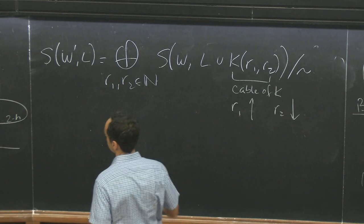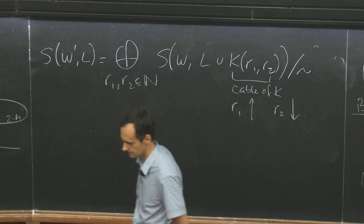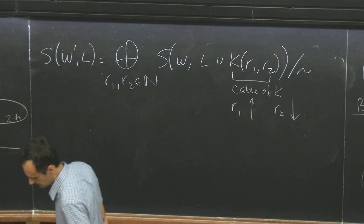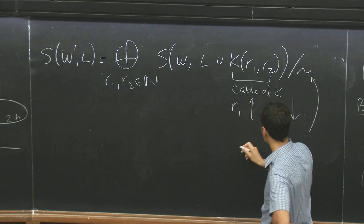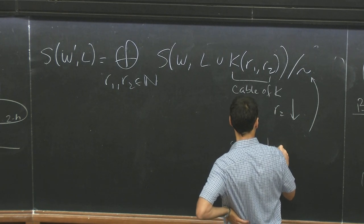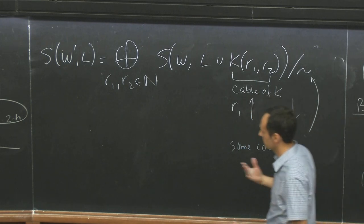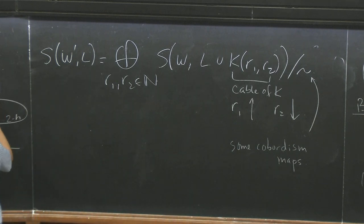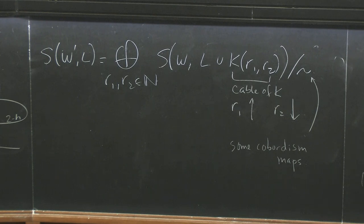So you have to understand kind of the, well, let's say you attach things to a ball, then you have to understand the Khovanov homologies of all the cables of the attaching link. And then you have some, well, some equivalence relation. Maybe for reasons of time, I'll just say that this is given by some cobordism maps between cables. Let me not write them down. But yes, basically, you have to understand the skein lasagna for the, for W, for L union cables of K.